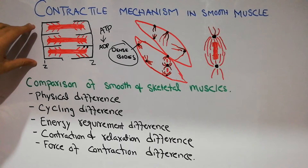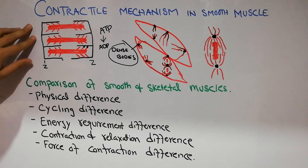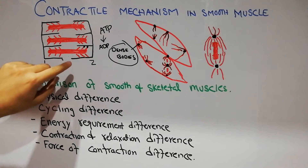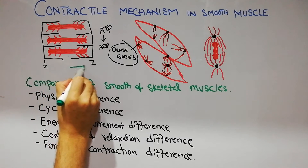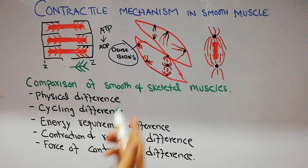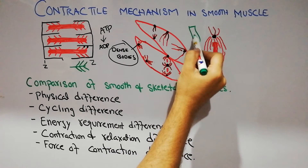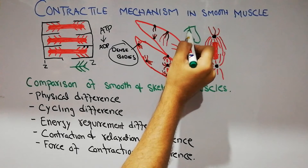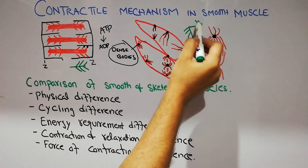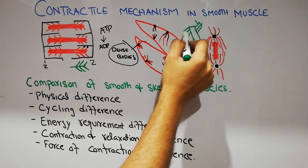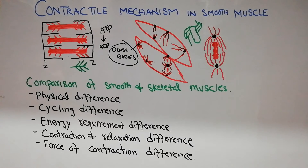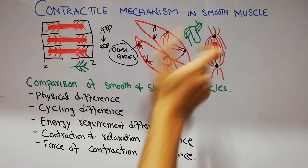Another difference is the arrangement of cross bridges. The cross bridges of skeletal muscles are all oriented in one direction and interact with actin filaments in that direction. In smooth muscles, however, the cross bridges of the myosin may be present in opposite directions — a side-polar arrangement — so cross bridges on one side move the actin filament in one direction while cross bridges on the other side move actin in the opposite direction.